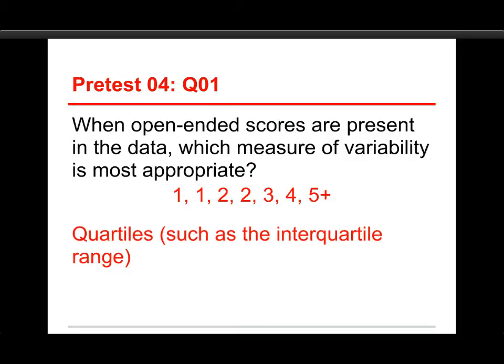For example, any time you're dealing with quartiles, the median, or the interquartile range, the first thing you should always do is take the data and put it in order. Here I've reordered it from lowest to highest, and you can see the phi-plus at the far end. The nice thing is the phi-plus doesn't even figure into the calculation of the quartiles, and that's one of the reasons the IQR works so well when you have open-ended scores, undefined scores, or skewed data.